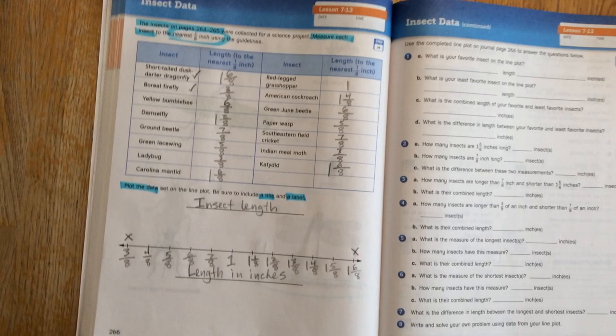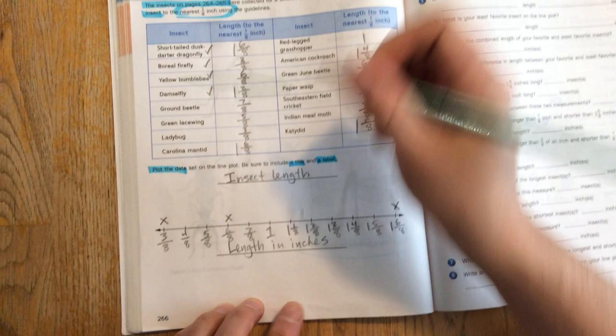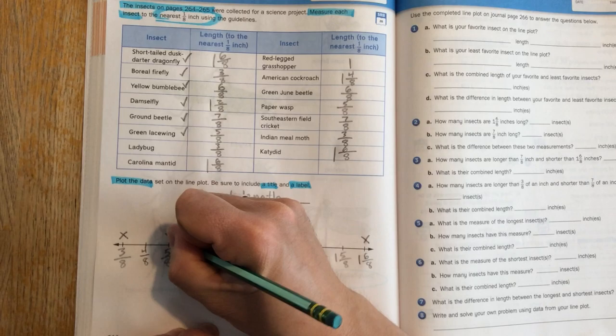So as I go and I check off each measurement, I put an x on that line plot, and after a while I'm going to start to see some commonalities. Green lacewing, that's 5 eighths of an inch. Okay, so right here.